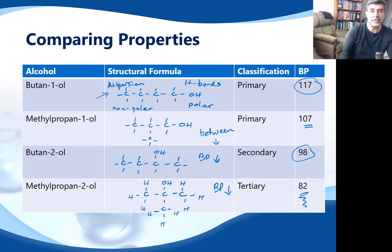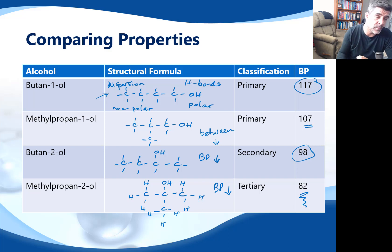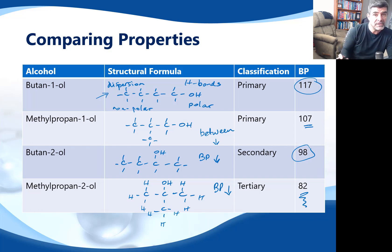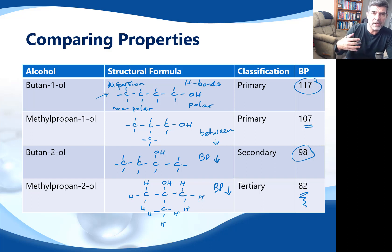We know that these boiling points are not affected by mass because the molar mass of all of these is the same. You can work out the molecular formula for each of these and you'll see it's the same for all four compounds, and yet the difference in boiling points is clearly there to see.